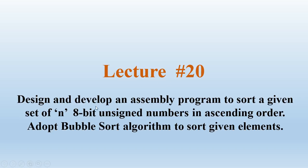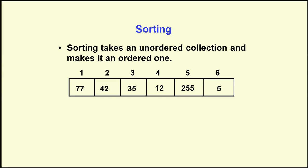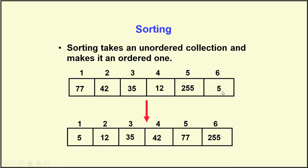This is Lecture 20. The problem statement is: design and develop an assembly language program to sort a given set of n 8-bit unsigned numbers in ascending order, adapting the bubble sort algorithm. Sorting takes an unordered collection and makes it an ordered one. We arrange the numbers so the least element comes first and the largest element goes last.